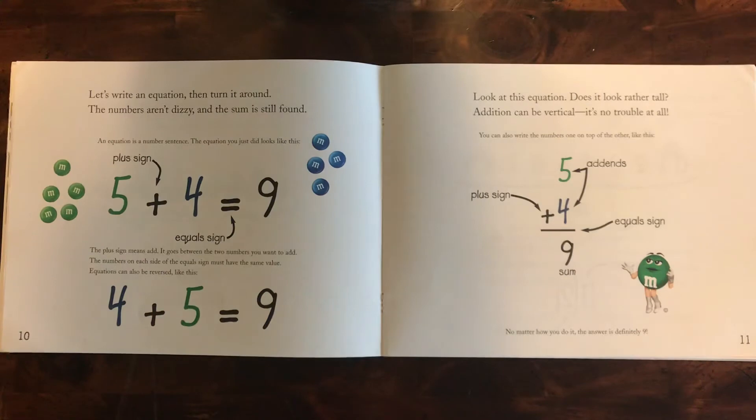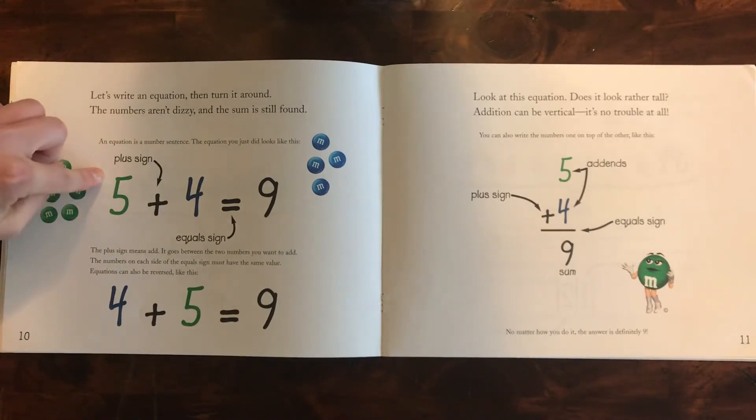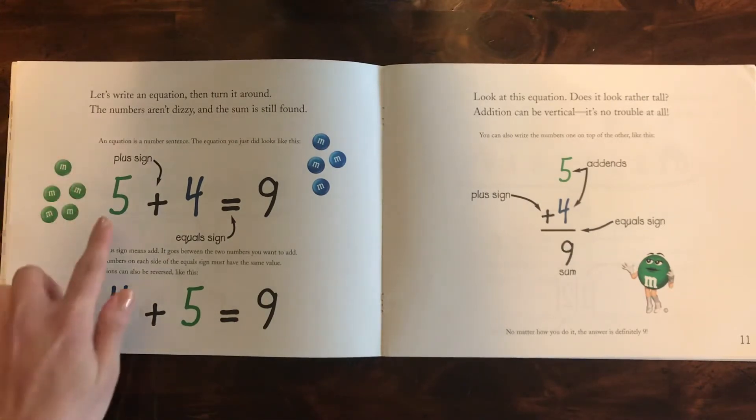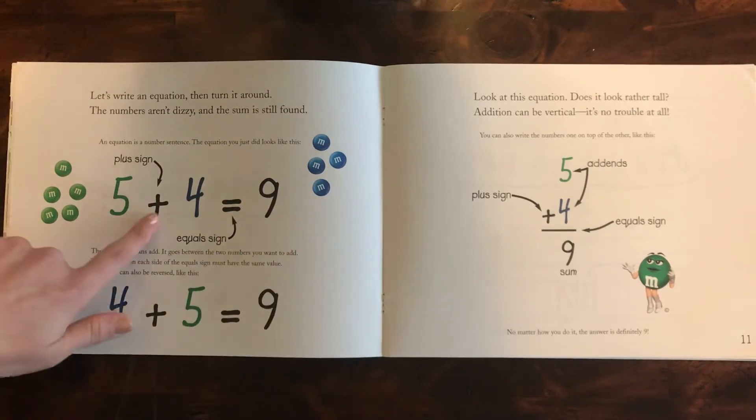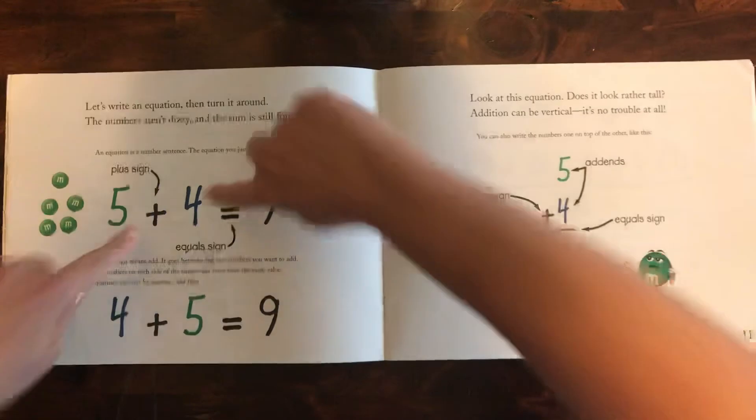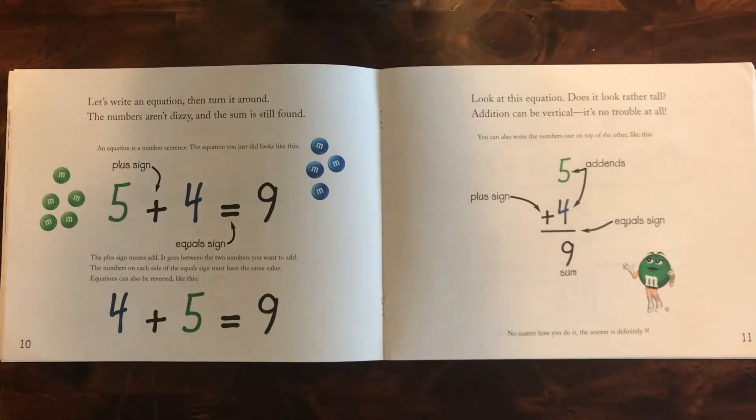Let's write an equation then turn it around. The numbers aren't dizzy and the sum is still found. An equation is a number sentence. The equation you just did looks like this: five plus four equals nine. You know that this is a plus sign and that's the equal sign. The plus sign means add. It goes between two numbers you want to add. The numbers on each side of the equal sign must have the same value. So equations can be reversed like this.